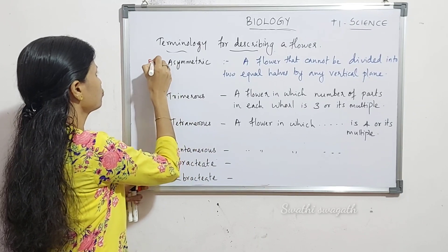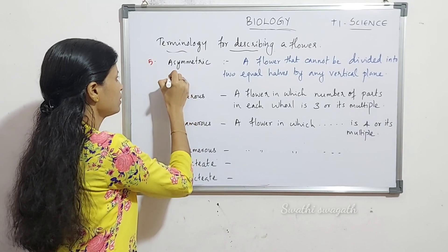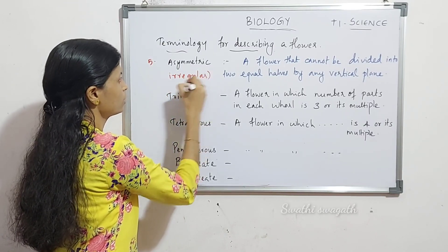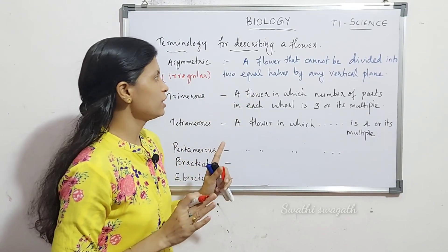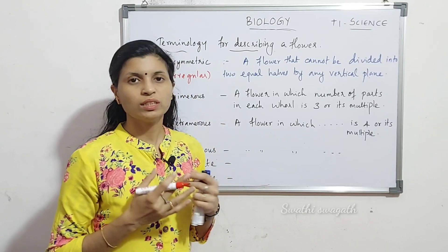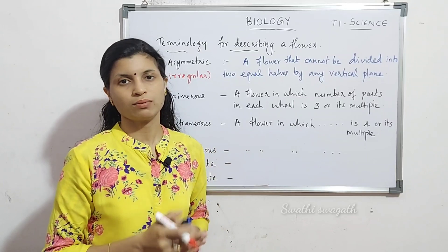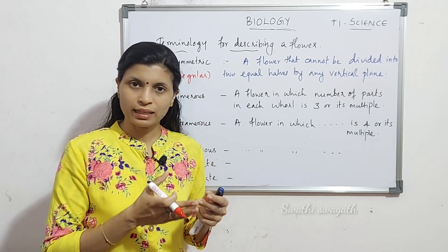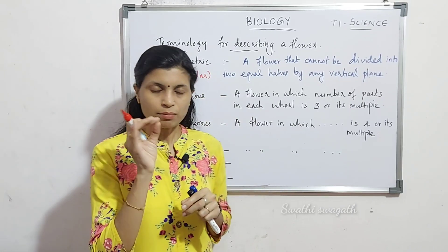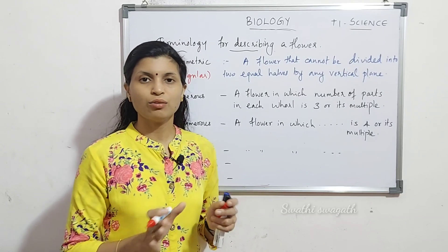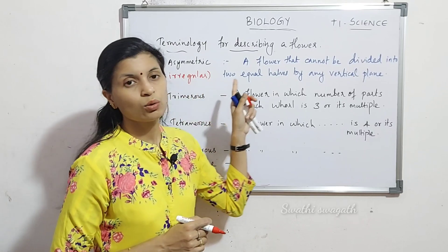The fifth terminology is asymmetric or irregular flower. An asymmetric flower is one that cannot be divided into two equal halves by any vertical plane. So actinomorphic allows any plane, zygomorphic allows one plane, and asymmetric — no plane gives equal halves. This third type is called asymmetric or irregular.